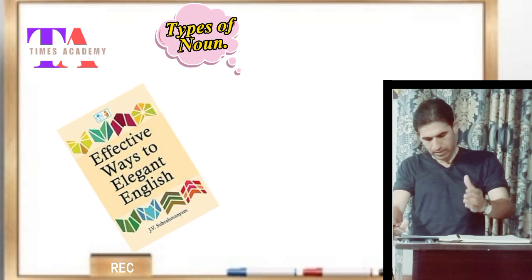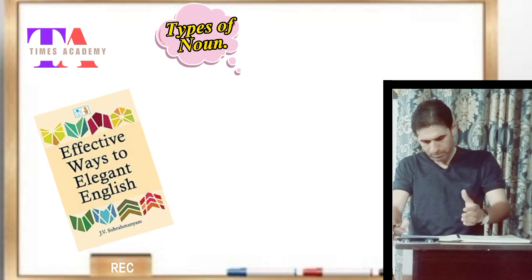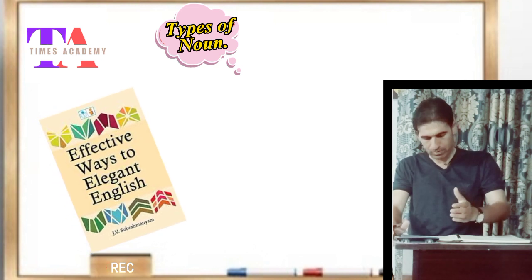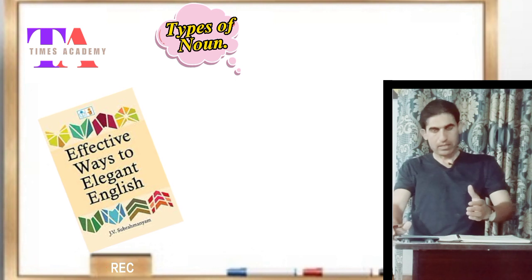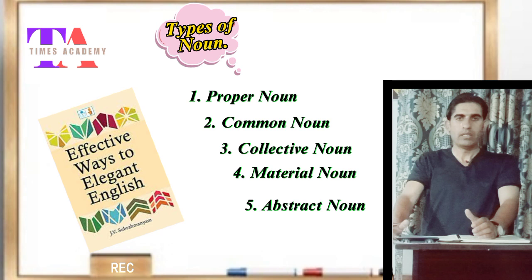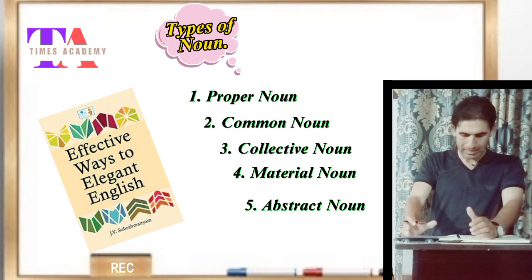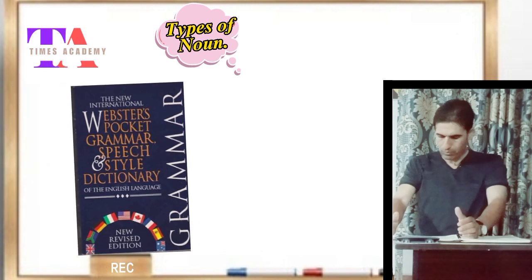The third source where the noun has been classified into five important categories is Effective Ways to Elegant English written by Jerry Subramania. The five categories include: number one, proper noun; number two, common noun; number three, collective noun; number four, material noun; and number five, abstract noun.